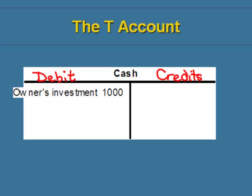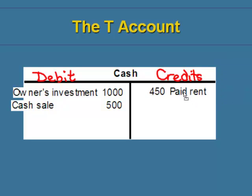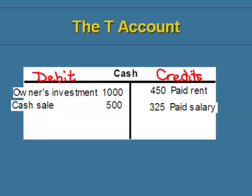An example of a transaction that increases cash is an investment by the owner — we put that on the debit side. Another example that increases a company's cash account is a sale. When a company decreases their cash, we put that transaction on the credit side. For example, if the company paid $450 rent, we put that on the credit side. A company can also pay salaries, which is another example of a transaction that decreases the cash account.